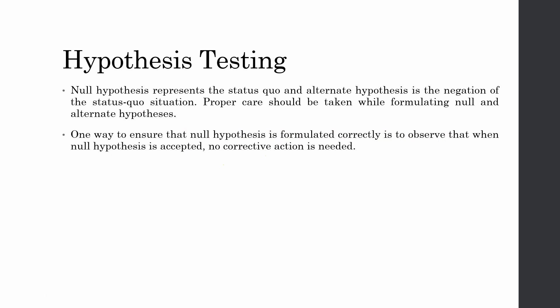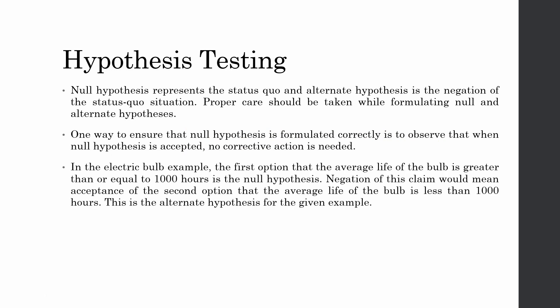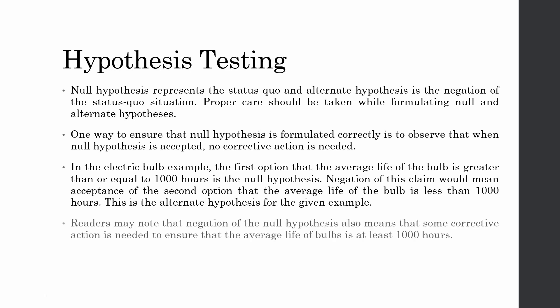For example, if there is no difference in job satisfaction between male and female, you do not need to take any corrective action. In the electric bulb example, if the claim stands true, the company needs to do nothing. But if the claim is false, they need to look into why the bulbs are not lasting 1000 hours. Rejecting the null hypothesis means there is a cause for concern and corrective action is needed.